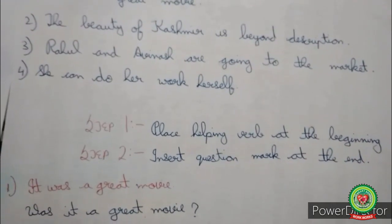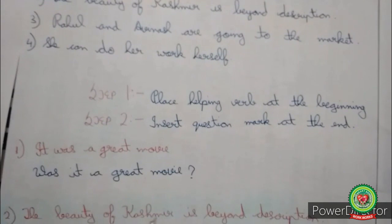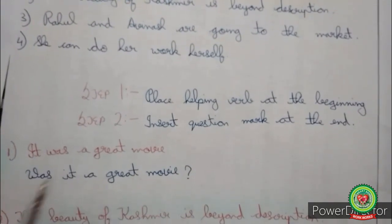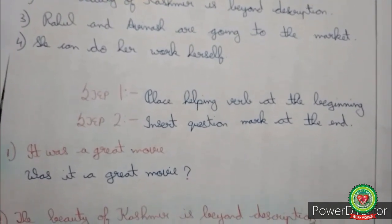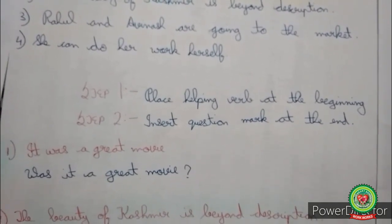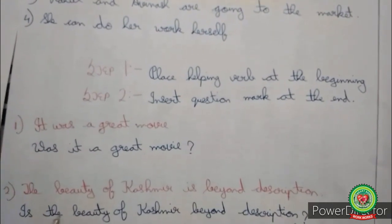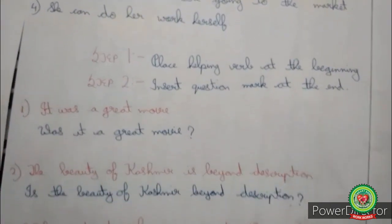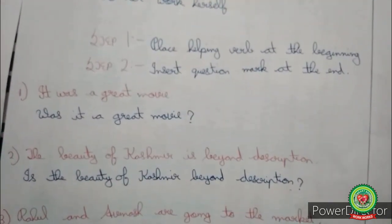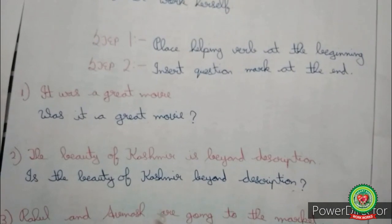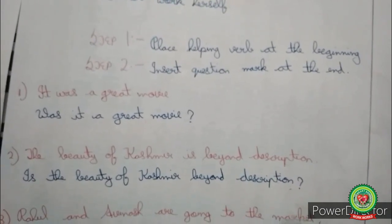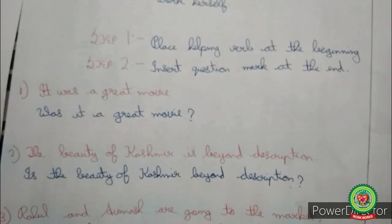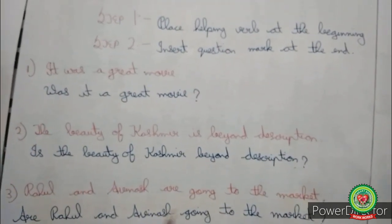Look at the second example: 'The beauty of Kashmir is beyond description.' Here is is the helping verb, so we place is at the beginning: 'Is the beauty of Kashmir beyond description?' See the third example: 'Rahul and Avinash are going to the market.' We place are at the beginning: 'Are Rahul and Avinash going to the market?'